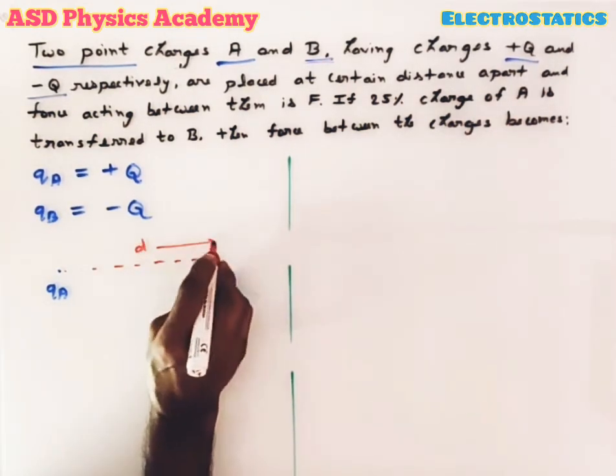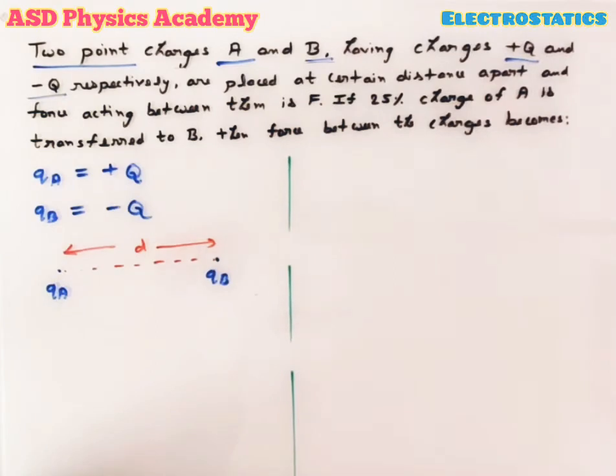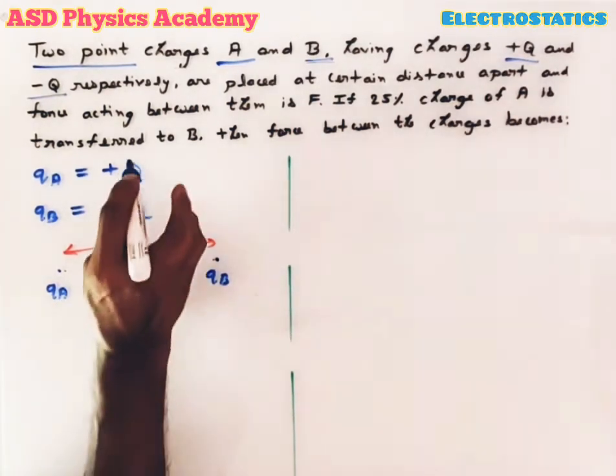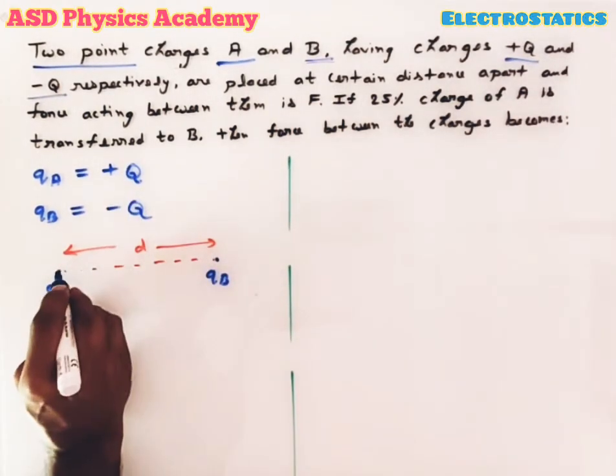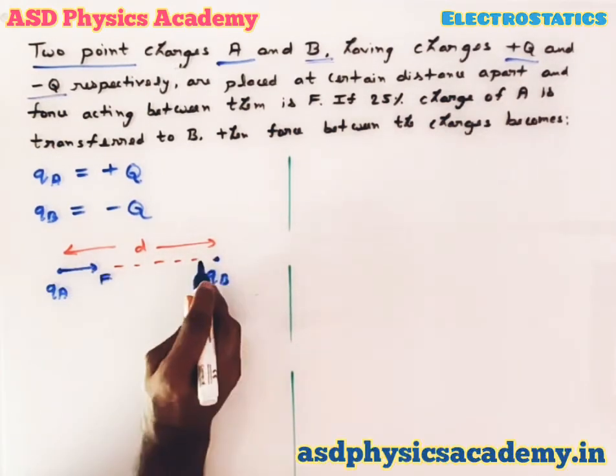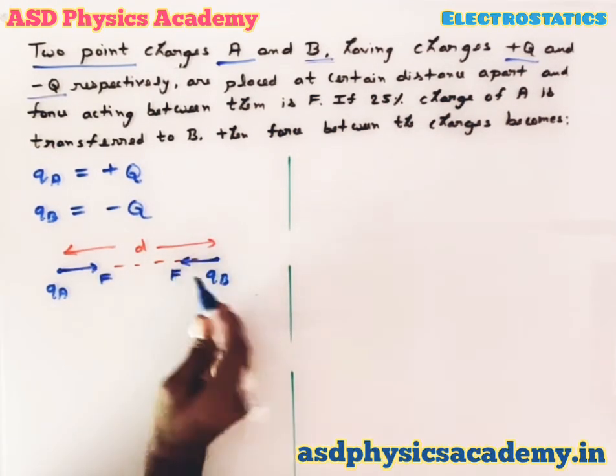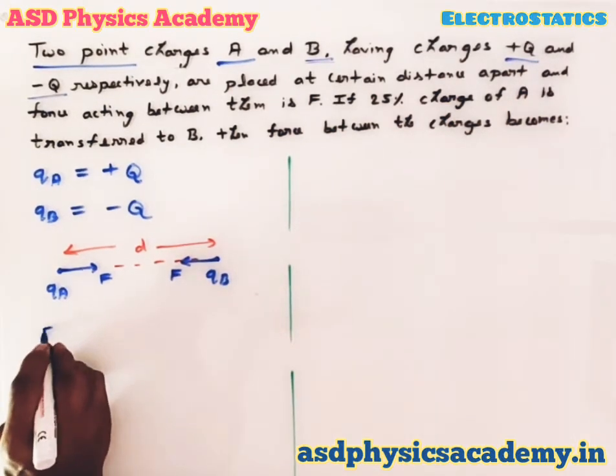As these two point charges qa and qb are of opposite nature, electrostatic attractive force will act along the line joining the two point charges and its value is given by F = 1/(4πε₀) × qa × qb / d².